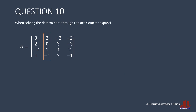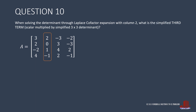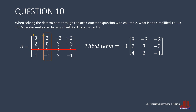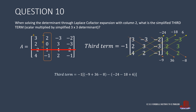Question 10 looks for the third term in the Laplace expansion problem. This time, we cover the third row, as it is where we derive the third term. The scalar then becomes negative 1 multiplied by the remaining elements' determinant. Take the diagonals and have negative 9, 36, and negative 8. The third term is then negative 1 of negative 9 plus 36 minus 8, less the quantity of negative 24 minus 18 plus 6, simplified as negative 55.